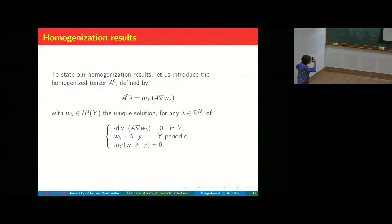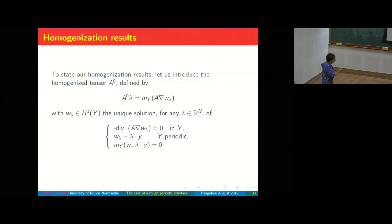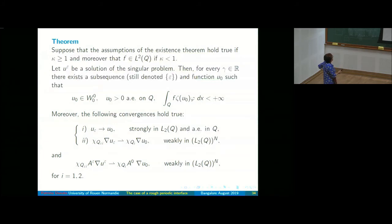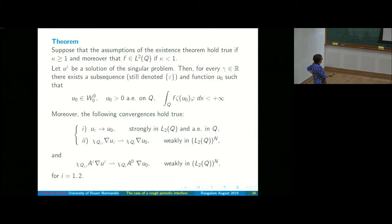Now let us discuss the homogenization result, meaning when ε → 0. We introduce the usual homogenized matrix. We suppose the assumptions of the theorem: for κ ≥ 1 and F in L^2 if κ < 1. Then there exists a subsequence still denoted ε and a function u^0 such that u^0 is positive and this integral is finite. We have strong convergence of the solution and weak convergence of the zero extension of the gradient.